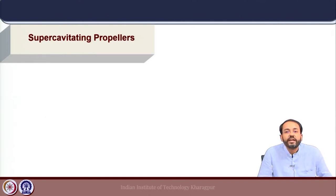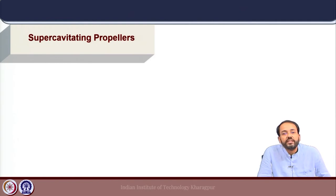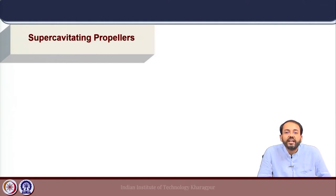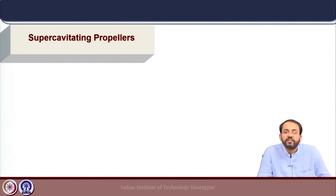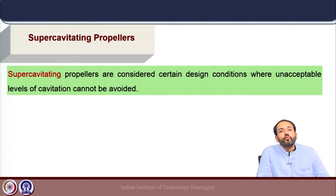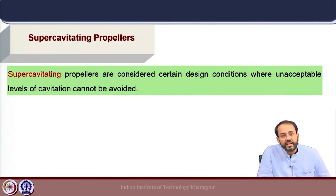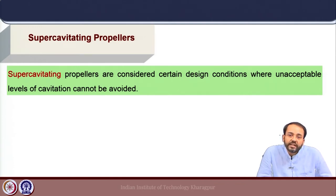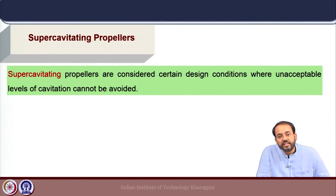We will start with supercavitating propellers. In the propeller cavitation section, we have seen that cavitation phenomena has an adverse effect on the thrust and efficiency of a propeller. For a conventional propeller, we try to avoid cavitation occurrence on the propeller blade. During propeller design, this is done by using suitable margins with respect to the thrust loading coefficient for specific geometrical parameters of the propeller blade.